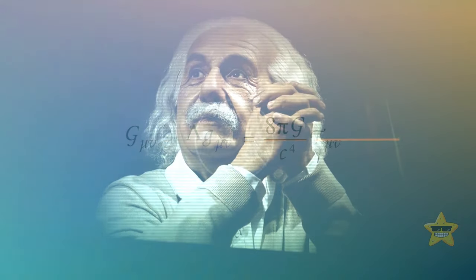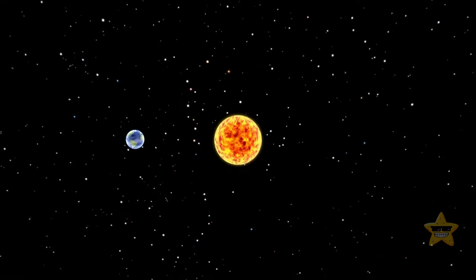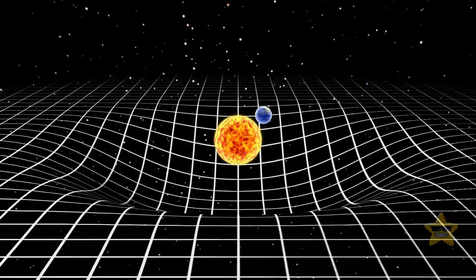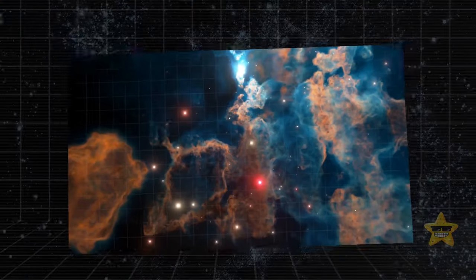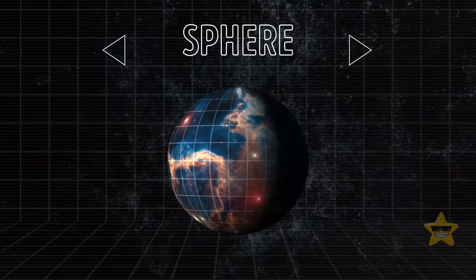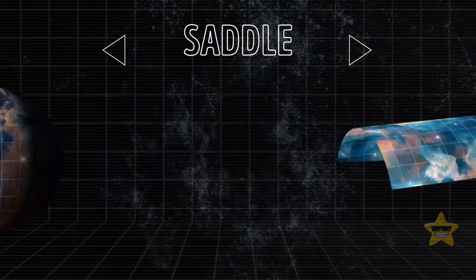According to the principles of general relativity, space has the ability to curve. This opens the door for the universe to have three potential shapes. A flat plane, like a sheet of paper, a closed sphere, like a ball, or an open saddle, like curve.